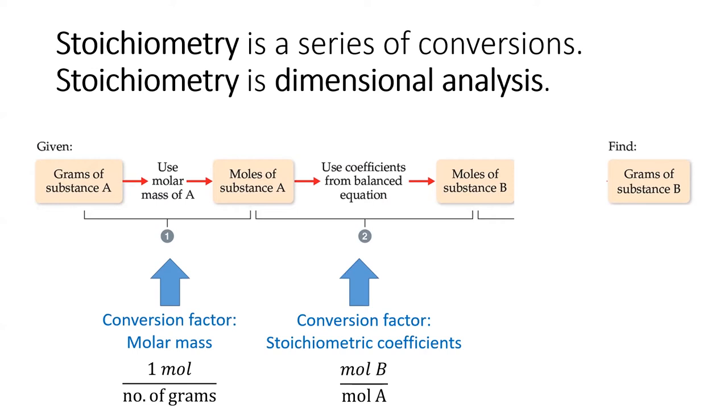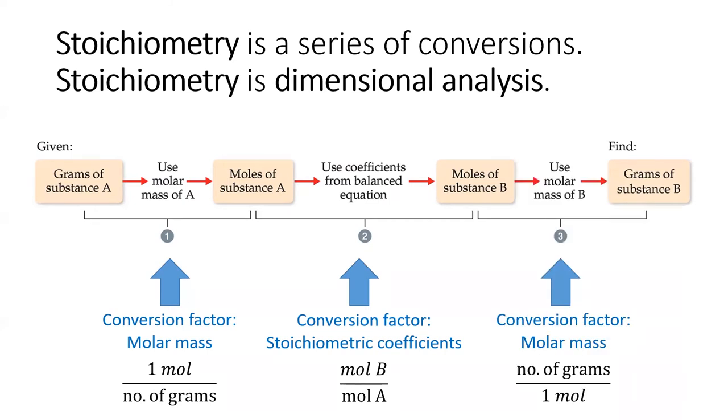This is called the mole ratio, and it converts from moles of the starting substance to moles of the target substance. Lastly, we'll use the molar mass of the target substance to convert to grams of that substance.